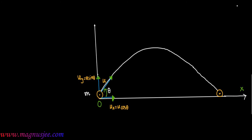We can denote the vertical direction as axis OY, which is the vertical direction. The projectile has two-dimensional motion: one motion is along the X axis and another motion is along the vertical axis or Y axis.